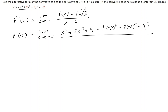All over x minus c. Again, c is equal to negative 2, so that gives us x minus negative 2. From here we're just simplifying, so let's go through this.